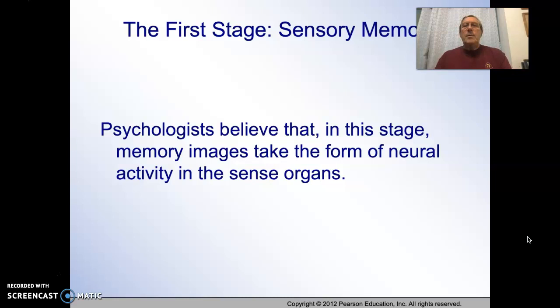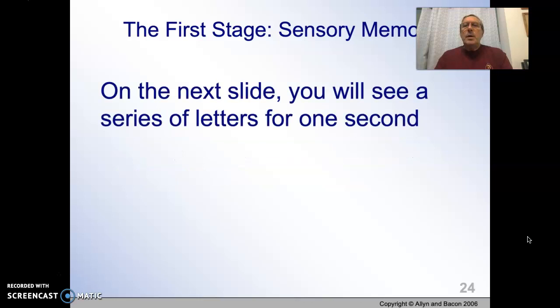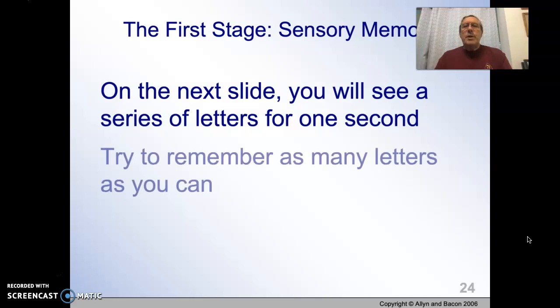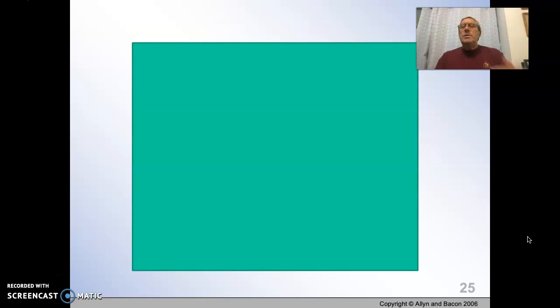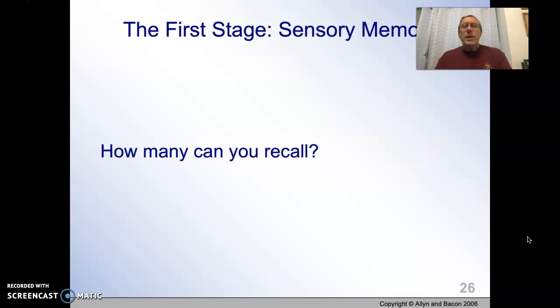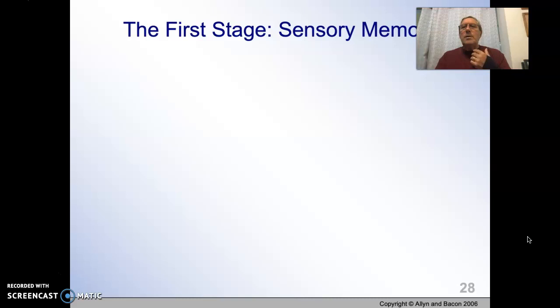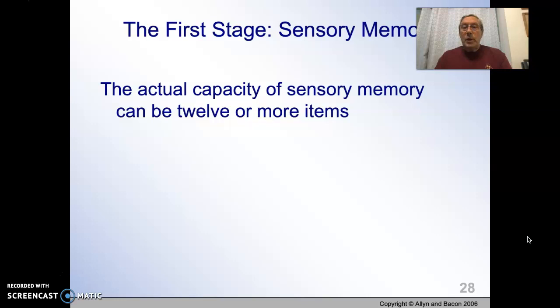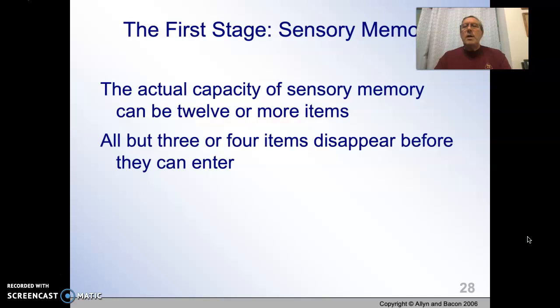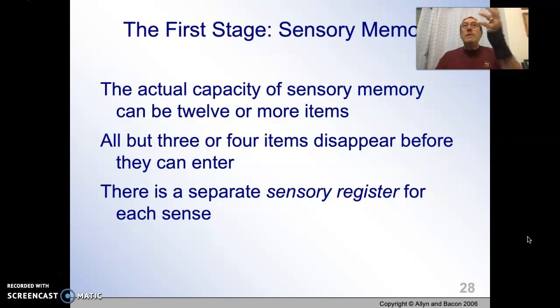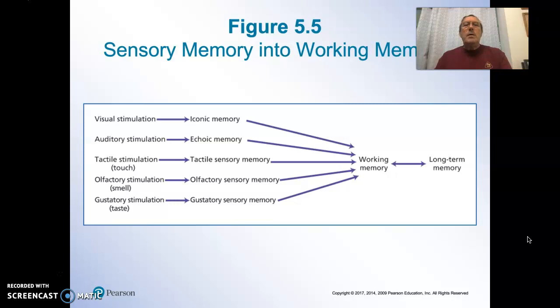At the first stage, sensory memory is extremely fast — this is your neural activity sensing information from the outside. It's demonstrated where you look at a series of letters and try to remember as many as you could in a short period of time. You might recall none, or up to all nine. Chances are you got a couple or maybe half, because our sensory memory is so quick. Generally we can hold about 12 items with some practice, but three or four items often disappear before they even get into working memory.